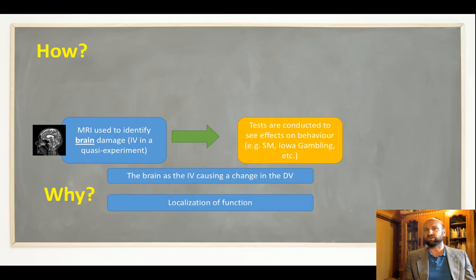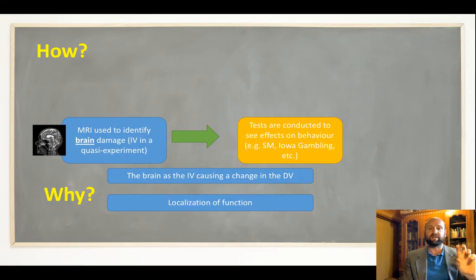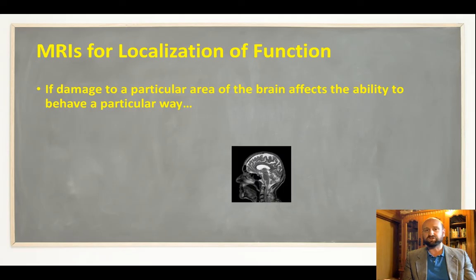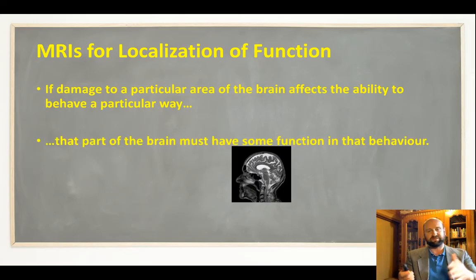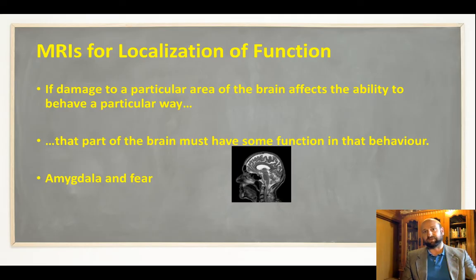And why do we do this? It allows us to understand localization of function. By studying people with damage to the same area of the brain and comparing them with a control group, we can draw conclusions about the role of that part of the brain in the behaviors being measured. If damage to a particular area affects your ability to behave in a certain way, it's logical to conclude that part of the brain has some function in that behavior. For example, SM has damage to her amygdala and doesn't feel fear — logical to conclude the amygdala plays some role in the ability to feel fear.